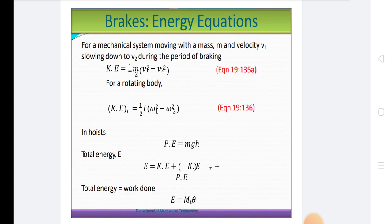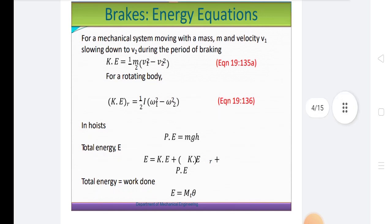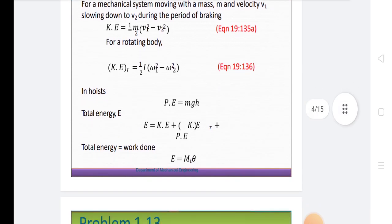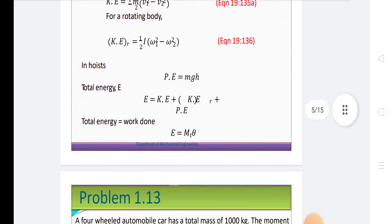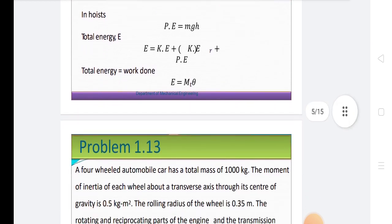Potential energy is equal to mass into g into h. Total energy is kinetic energy plus potential energy. Total energy is equal to work done is equal to E is equal to MT into theta.